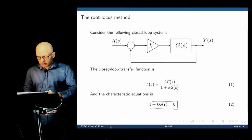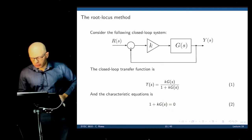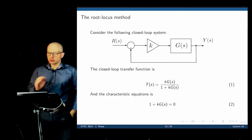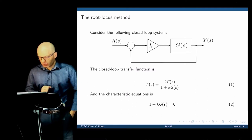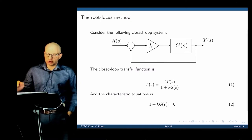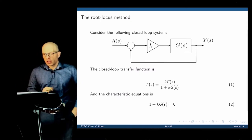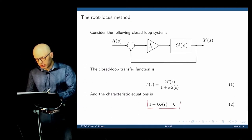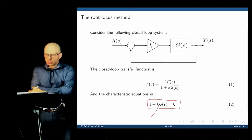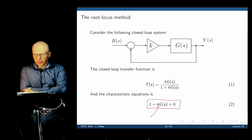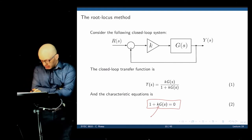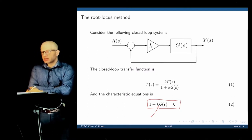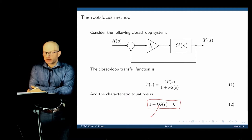Let's generalize this idea and find a method to locate all poles. Consider a closed-loop system with plant G(s) and a proportional gain K controller. The closed-loop transfer function is the loop function divided by 1 plus the loop function, giving characteristic equation 1 + K·G(s). Notice that K appears in the denominator, which means that by changing K, we change the location of the poles. We may make a stable system unstable, or stabilize an unstable system by properly regulating K.